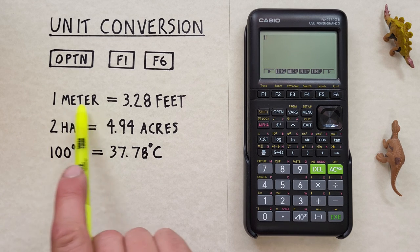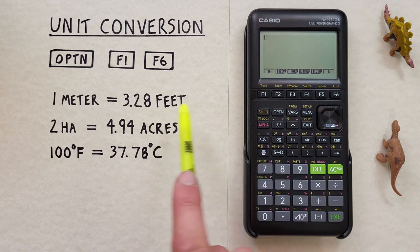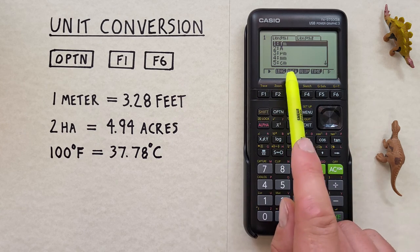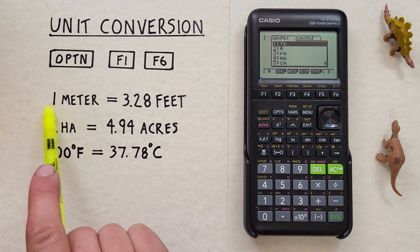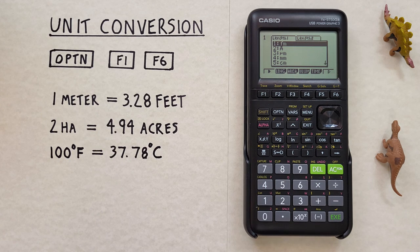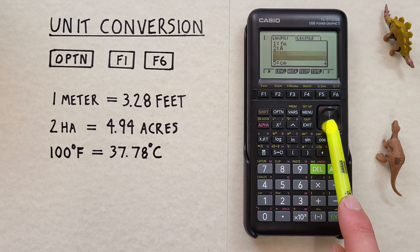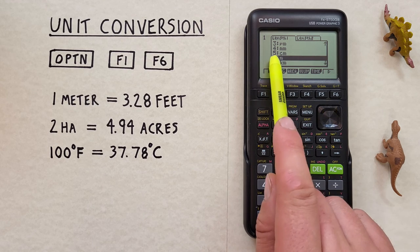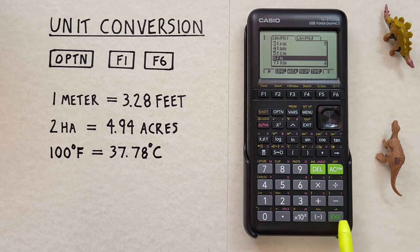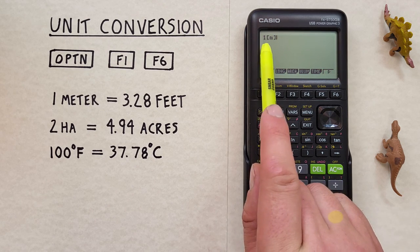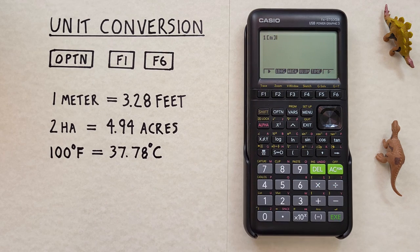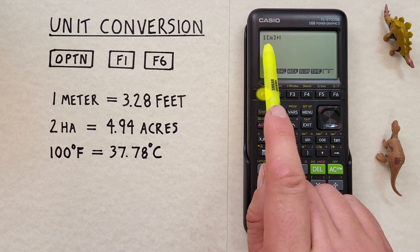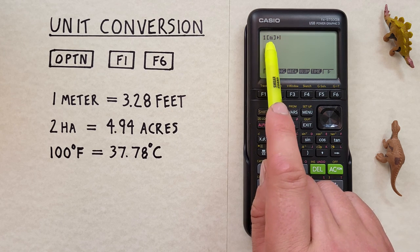Our first question was length though, we wanted to get one meter in feet so we choose F2 and then it gives us a list of different length units here. Well our one is in meters so we want to scroll down until we see M for meters so we'll select that with the EXE key. There we go, this says one meter and now we want to convert so we press the F1 which has this arrow here. That tells our calculator convert one meter into.